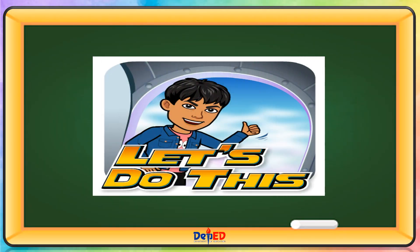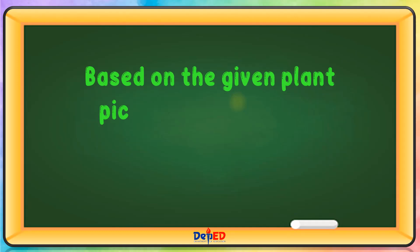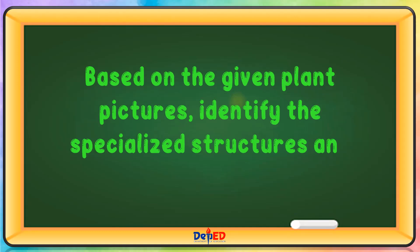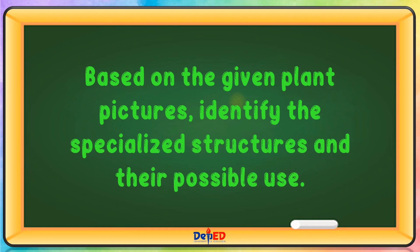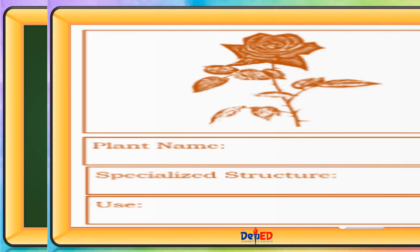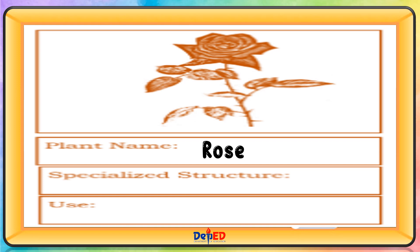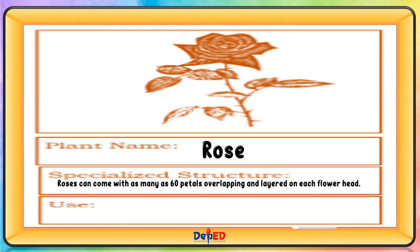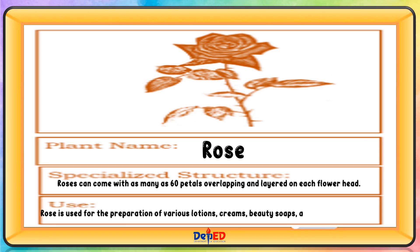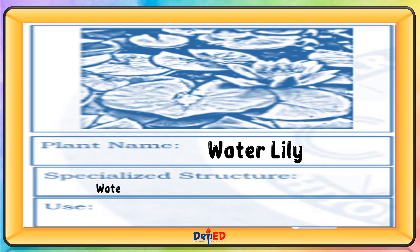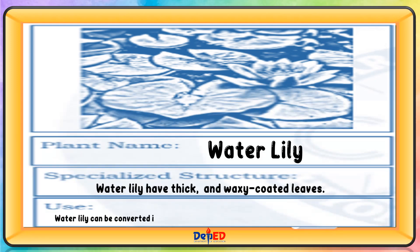Let's do this. Based on the given plant pictures, identify the specialized structure and their possible use. Plant name: Rose. Specialized structure: roses can come with as many as 60 petals overlapping and layered on each flower head. Rose is used for the preparation of various lotions, creams, beauty soaps, and aromatherapy oil. Plant name: water lily. Water lily has thick and waxy coated leaves. Water lily can be converted into charcoal briquettes, ideal for household cooking and grilling.